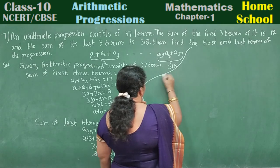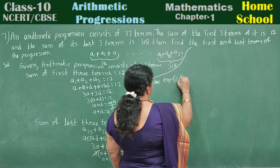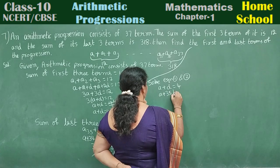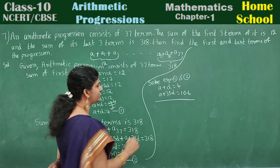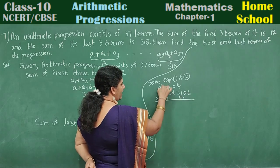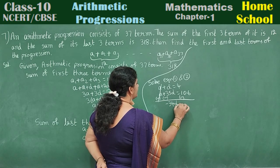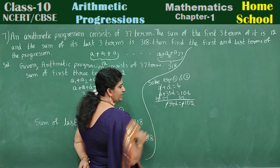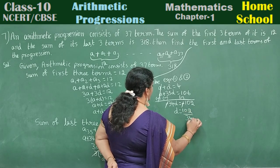Now solve equations 1 and 2. Equation 1: a plus d equals 4. Equation 2: a plus 35d equals 106. Subtract equation 1 from equation 2. The a terms cancel. We get d minus 35d equals minus 34d, and 4 minus 106 equals minus 102. So minus 34d equals minus 102.